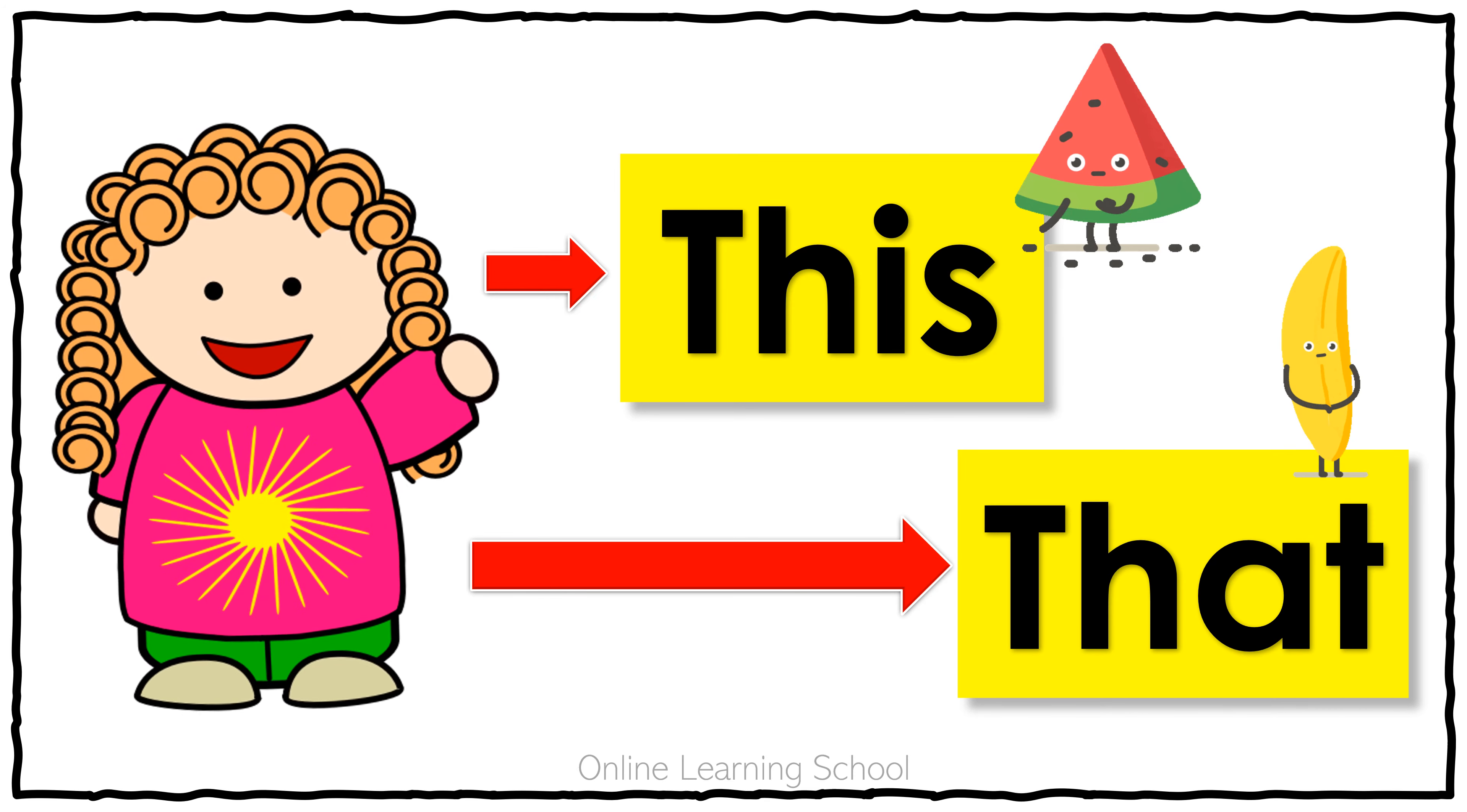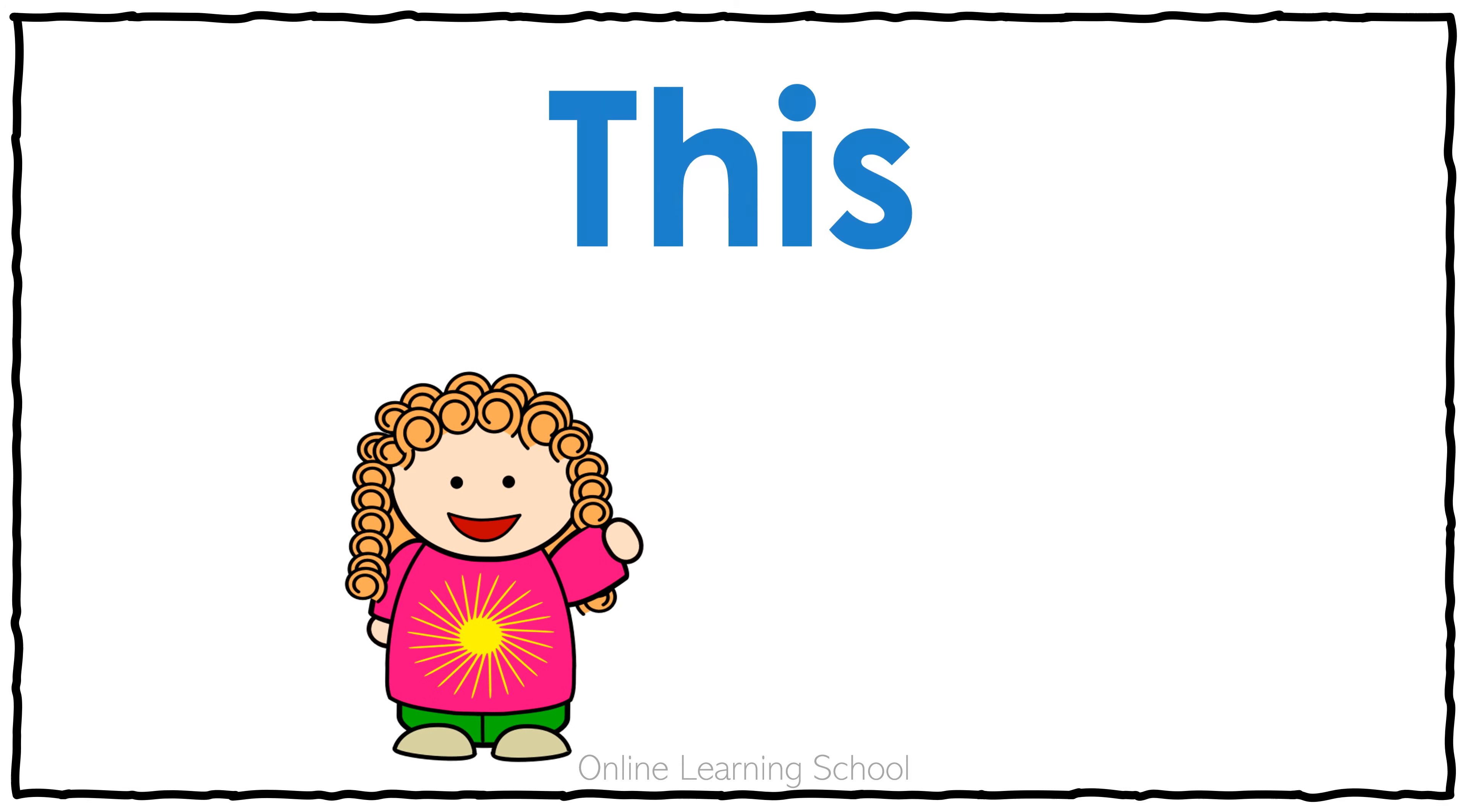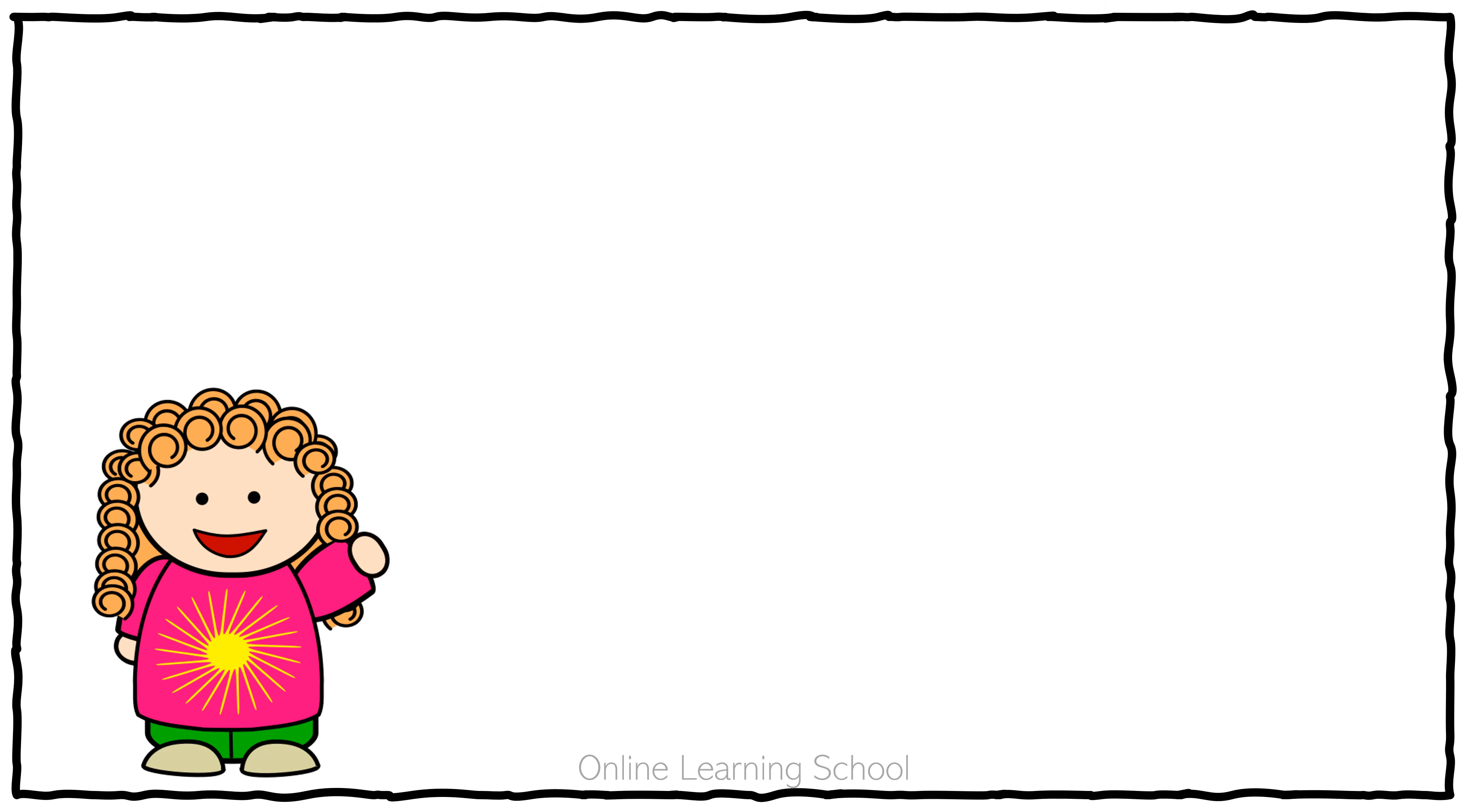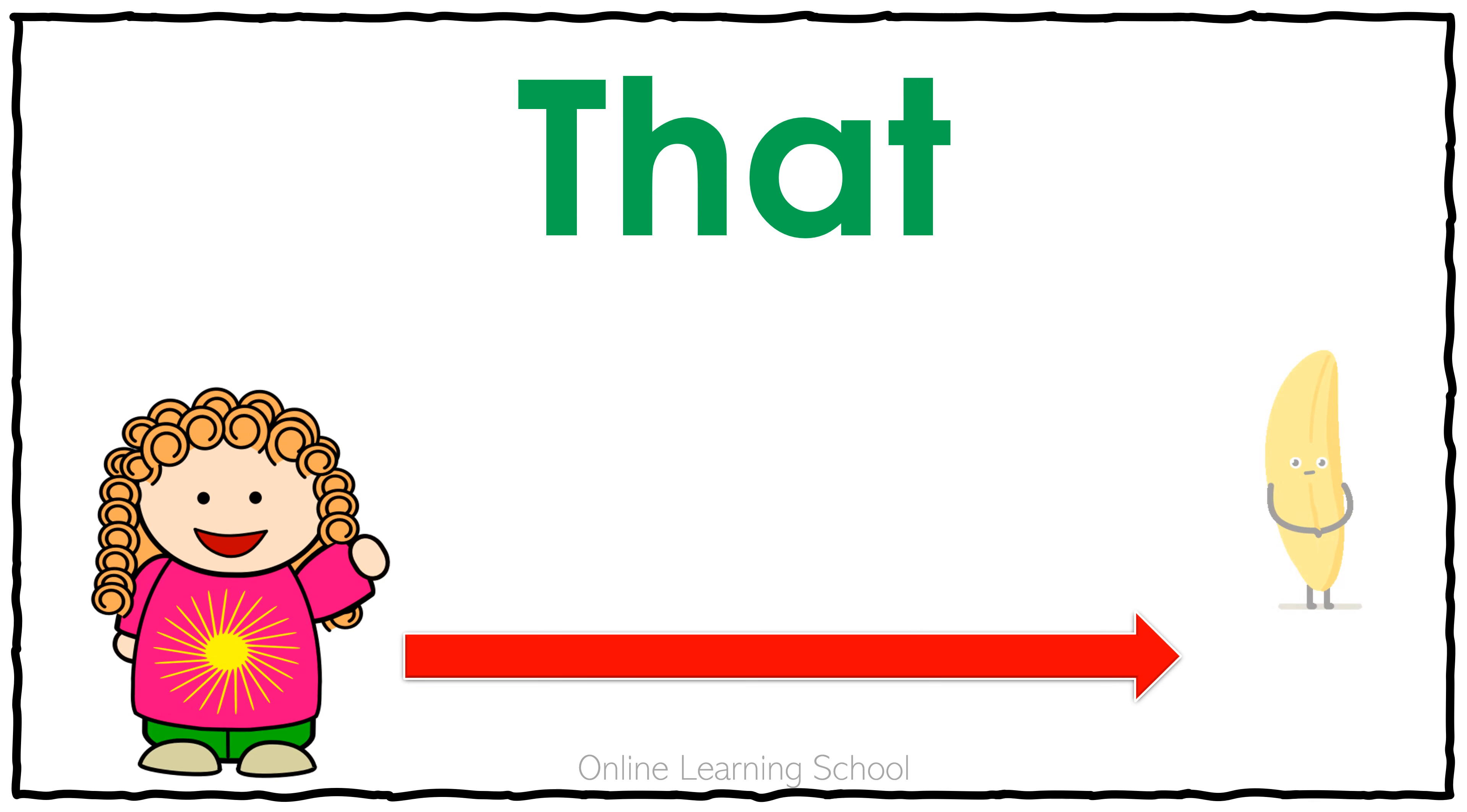This and that. This is used to refer to a singular noun that is near to us, for example, this is a watermelon. That is used to refer to a singular noun that is far from us, for example, that is a banana.